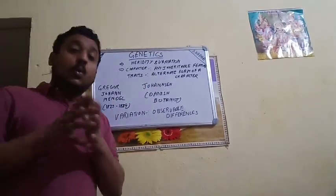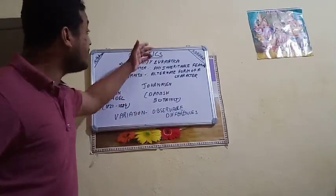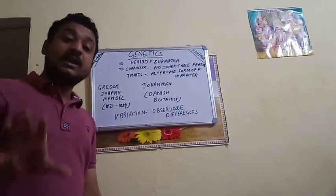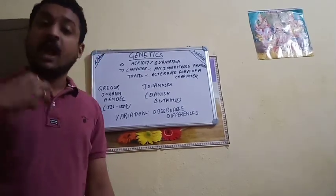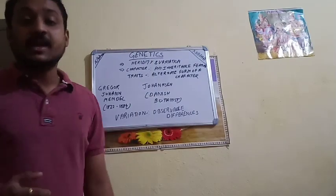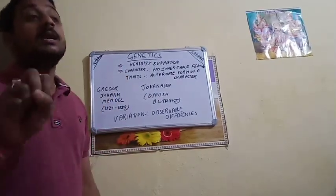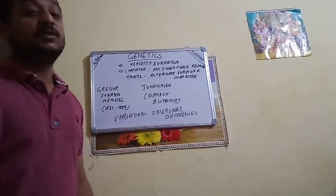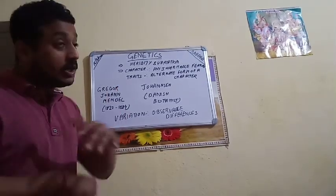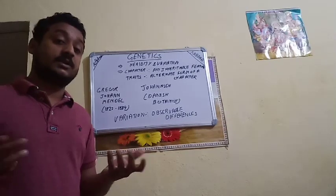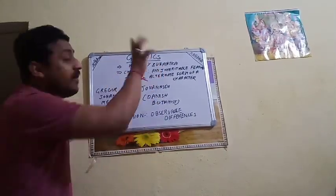Before going further, let us have a brief discussion on character, trait, and variation. Heredity we understand — things inherited from forefathers pass to us and from us to the next generation. Any inheritable feature is called a character. An alternate form of that character is called a trait. Together, character and trait form the concept of variation.